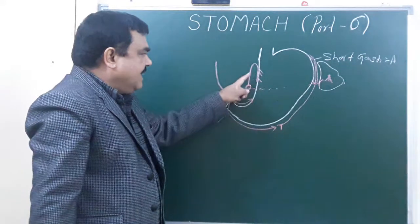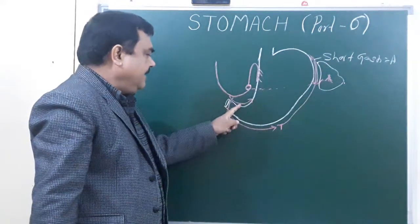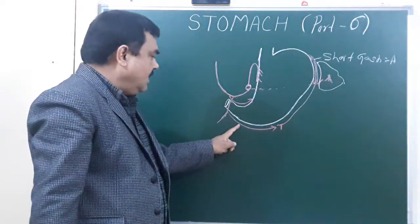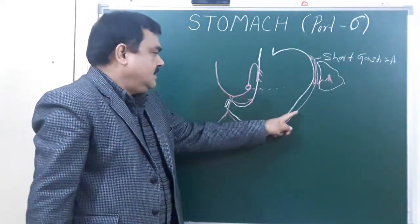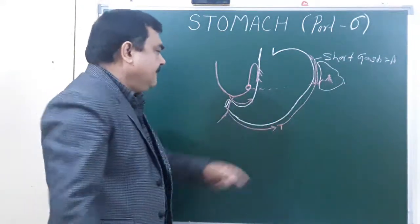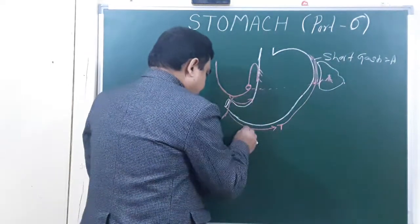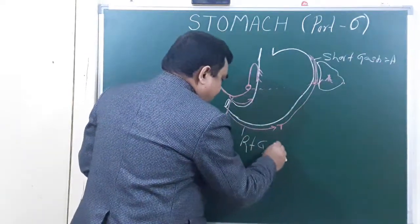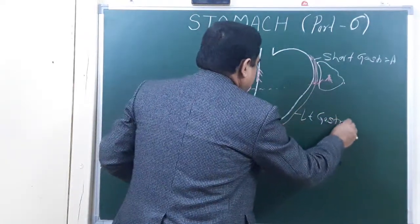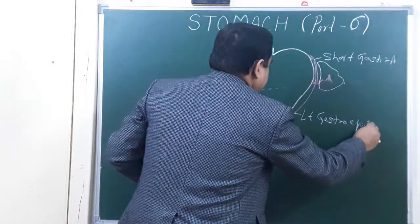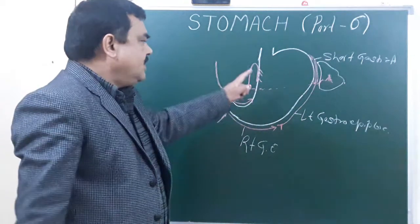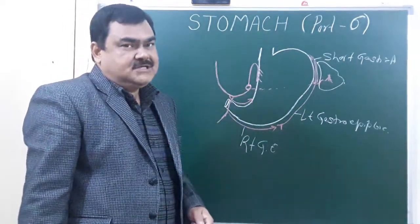So the stomach is supplied by the left gastric artery, right gastric artery. Here is the gastroduodenal, which gives the right gastroepiploic. Here is the right gastroepiploic, left gastroepiploic. And this is the short gastric artery. So these are the numerous arteries which give supply to the stomach.